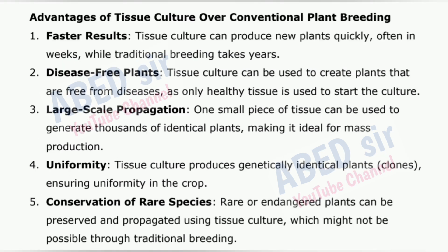Advantages of tissue culture over conventional plant breeding: 1. Faster results – tissue culture can produce new plants quickly, often in weeks, while traditional breeding takes years. 2. Disease-free plants – tissue culture can be used to create plants that are free from diseases, as only healthy tissue is used to start the culture. 3. Large-scale propagation – one small piece of tissue can be used to generate thousands of identical plants, making it ideal for mass production. 4. Uniformity – tissue culture produces genetically identical plants (clones), ensuring uniformity in the crop. 5. Conservation of rare species – rare or endangered plants can be preserved and propagated using tissue culture, which might not be possible through traditional breeding.